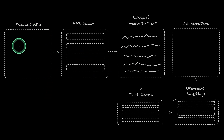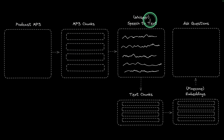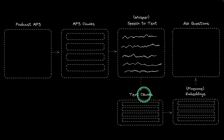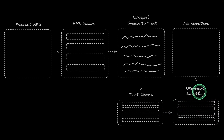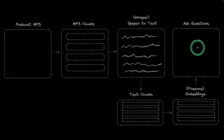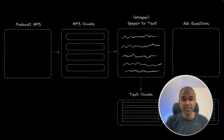In technical details, once the MP3 is divided into chunks, we use the Whisper model to convert speech to text. That text is then converted to text chunks, which get converted to embeddings and stored in Pinecone. We then use that information to ask questions, similar to a RAG application. That's exactly what we're going to see today — let's get started.